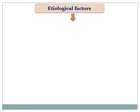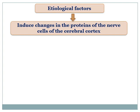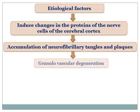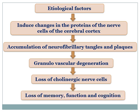Now, a step-by-step flowchart of the pathophysiology. Several etiological factors are involved in inducing changes in the proteins of the nerve cells of the cerebral cortex. These harmful proteins accumulate in nerve cells as neurofibrillary tangles and in the development of plaques. These plaques further lead to granulovascular degeneration, increasing the loss of cholinergic nerve cells, which then causes loss of memory, loss of function, and loss of cognition.